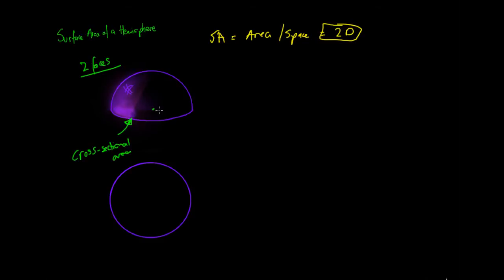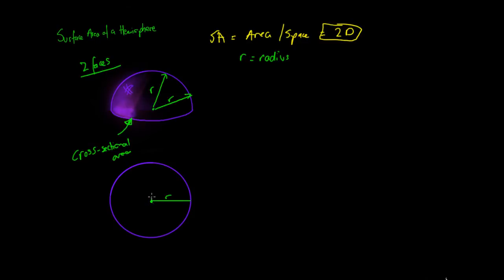With a sphere, we have a center point, and any line we draw from the center to the edge is the same distance. We call this line the radius, denoted as r. When we cut the sphere in half, the cross-section at the center is a circle, and any line from the center to the edge of that circle is also the radius.